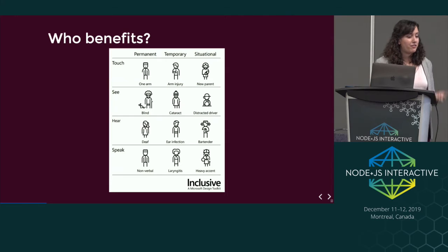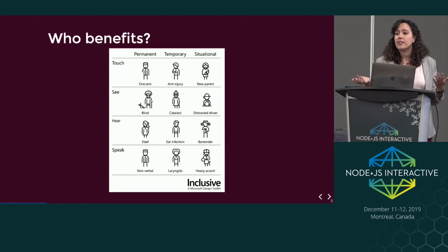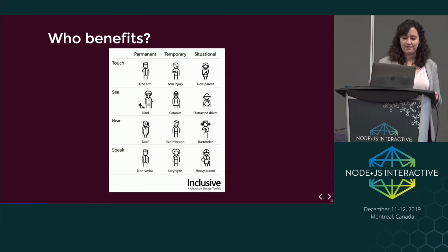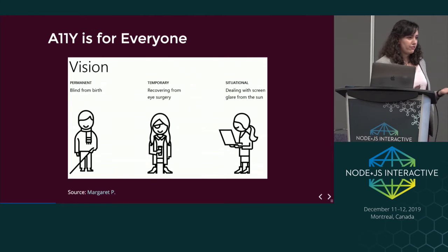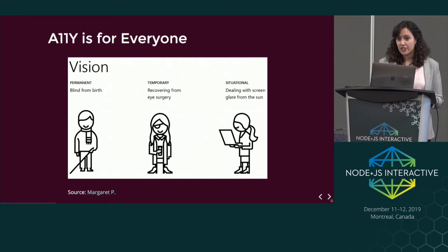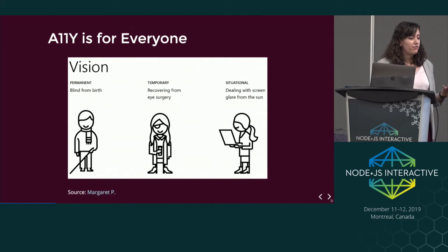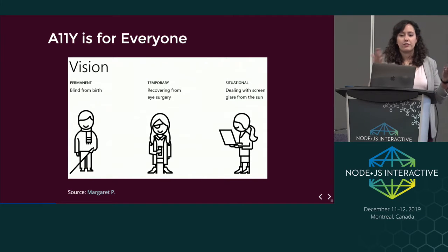You might be a new parent with a baby in one arm, trying to navigate an entire application with just one hand. Or you might be a bartender who benefits from having captions on TV because there's no way you'd hear it. One of my favorite examples is about vision: you may be blind from birth and use a screen reader, or you might have had eye surgery and only have one eye covered by an eye patch. You'd still benefit from good contrast so you can perceive everything on an application.